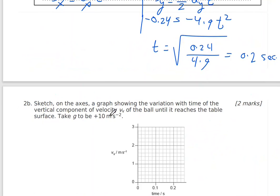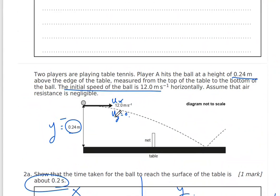The next question asks us to sketch the graph showing the variation with time of the vertical velocity of the ball until it reaches the table surface. It starts at uy = 0. The velocity in the y-direction increases, while the velocity in the x-direction remains constant — so the x-direction arrows stay the same length but the y-direction arrows keep increasing.